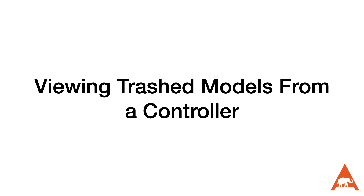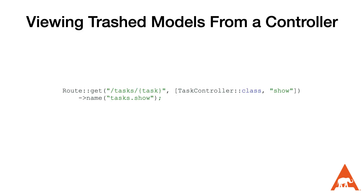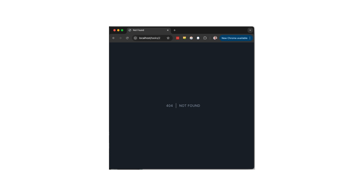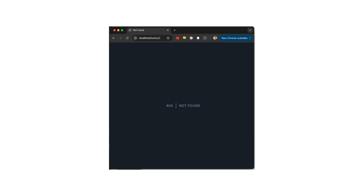If a user attempts to access a soft deleted model using the default routing, they're going to receive a 404 error. This makes sense, but what if we want to display a message indicating that it was deleted and not just a blank error page? To do this, we can add the with trashed call to our route definition, and then the page will route as expected.